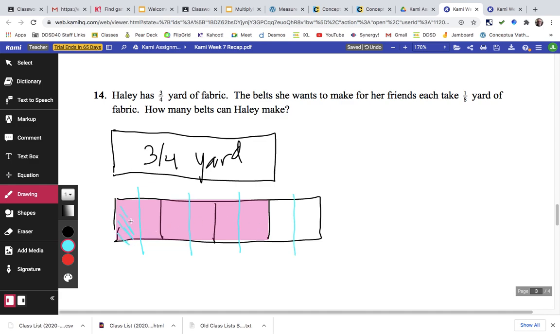The important part here was to be able to see the entire yard, one yard of fabric. Then one belt would take up right here, which is 1/8, and so we can really count them up. There's 1, 2, 3, 4, 5, 6. So we already know the answer is going to be 6.